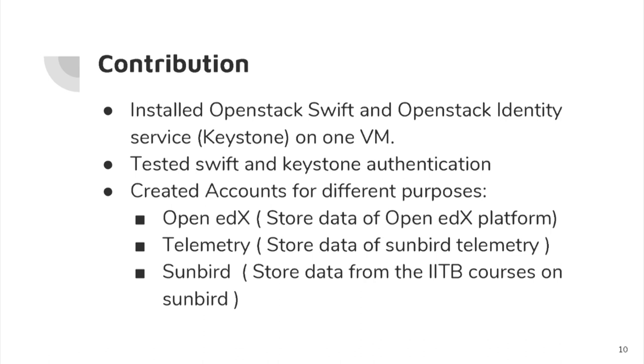Account level APIs list account details and the containers under them. Container level APIs show the objects in a container, and object level APIs perform all operations on objects. Our contributions included installing OpenStack Swift and Keystone on a VM provided to us. We tested functionality by creating temporary accounts and storing data, and once we confirmed it was working, we created three major accounts: one for Open edX, one for telemetry, and one for Sunbird content. We also created a user manual showing how to use Keystone and Swift.